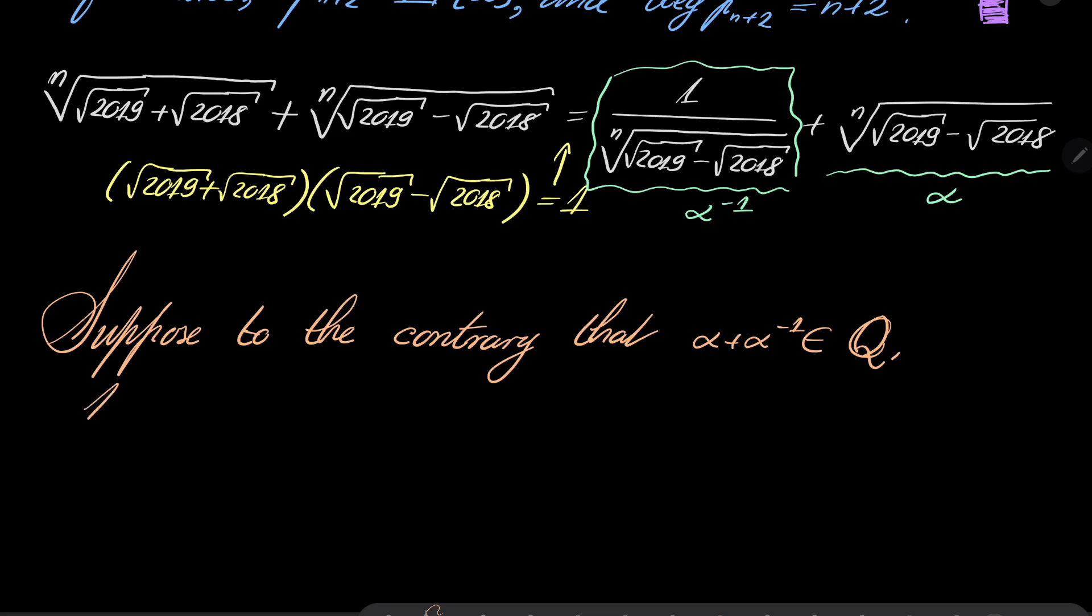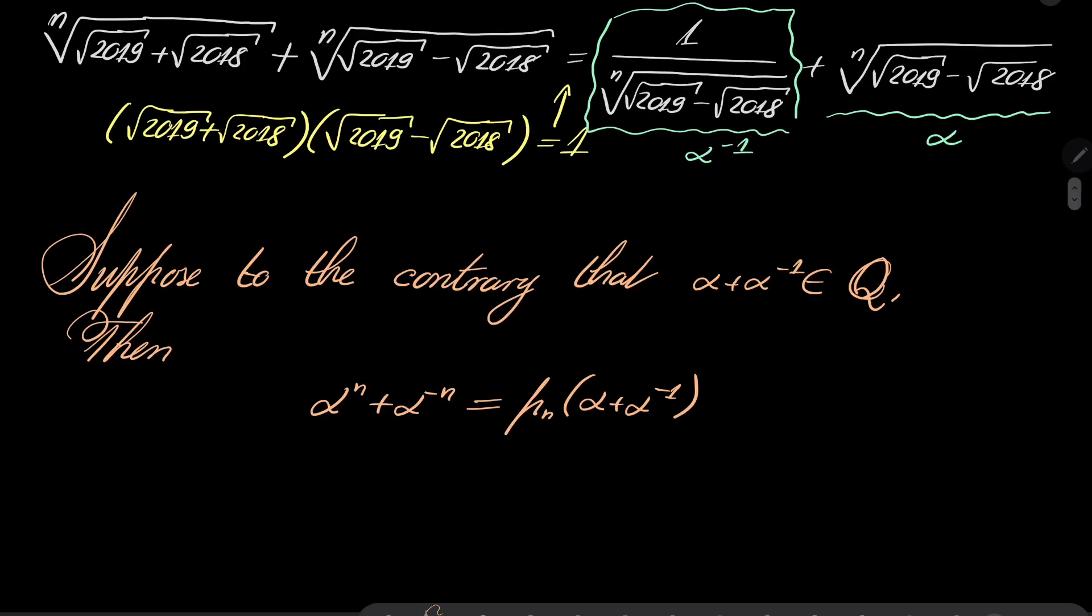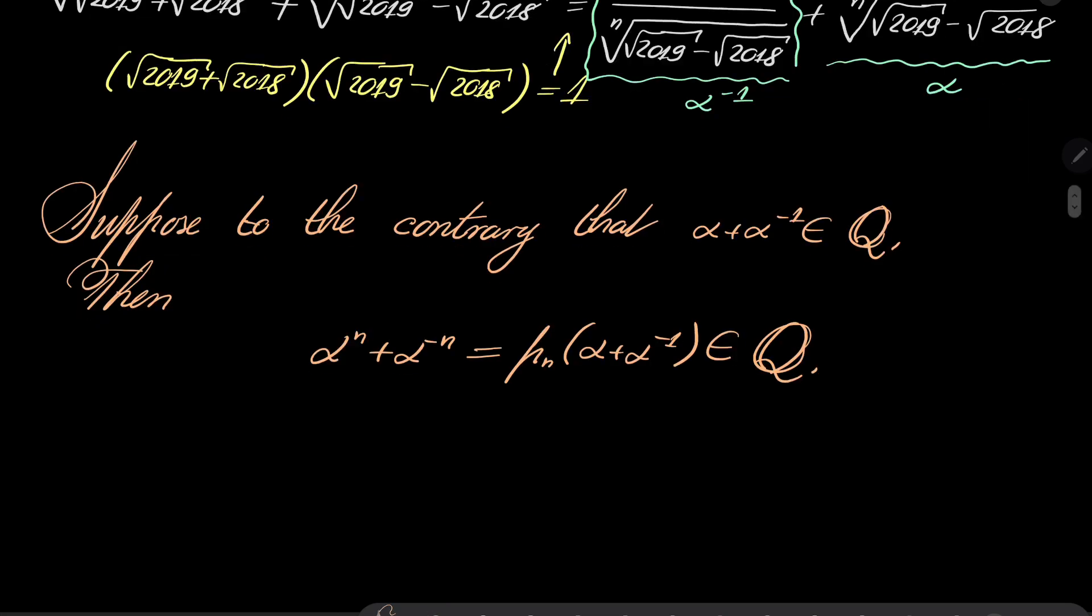Well, notice that then α^n + α^(-n) can be written as polynomial with integer coefficients evaluated at this. It is by our claim. Well, since this is rational, this is also rational.